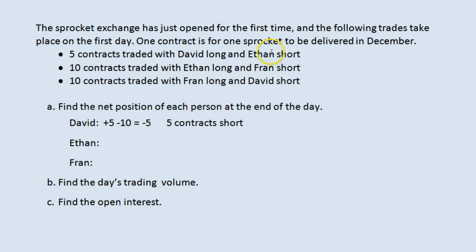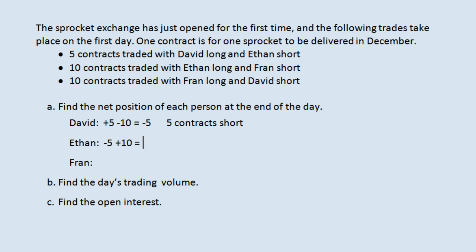Ethan in the first trade is five contracts short, and later in the day he is ten contracts long. At the end of the day that nets to plus five, so he is five contracts long. Again, he did two different things and they net out at the end to be five contracts long.